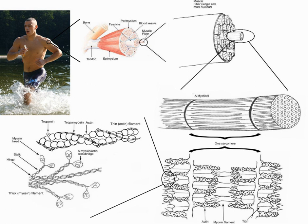The threadlike muscle fibers are the individual muscle cells, and each cell is encased within its own endomysium of collagen fibers. Thus, the overall muscle consists of fibers that are bundled into fascicles, which are themselves grouped together to form muscles. At each level of bundling, a collagenous membrane surrounds the bundle, and these membranes support muscle function both by resisting passive stretching of the tissue and by distributing forces applied to the muscle. Scattered throughout the muscles are muscle spindles that provide sensory feedback information to the central nervous system. This grouping structure is analogous to the organization of nerves which uses epineurium, perineurium, and endoneurium.